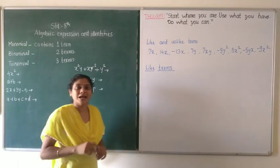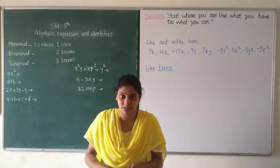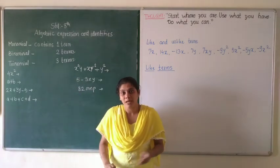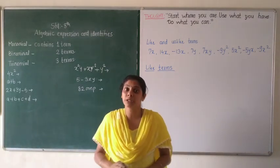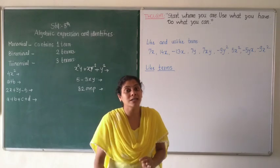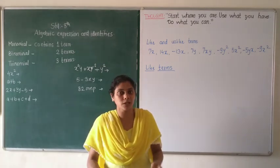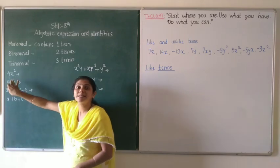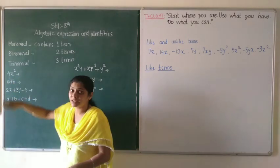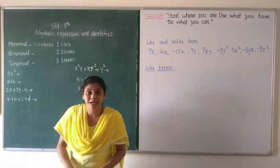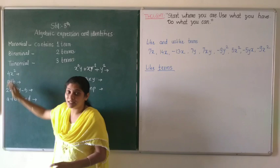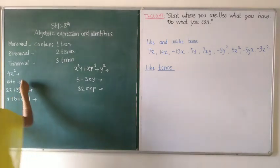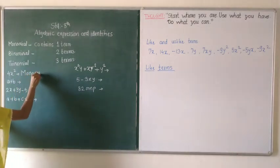Already in the last section we studied how to count the terms. You can see I have written here some examples of expressions. While going through these expressions we have to count the number of terms, and on the basis of their number of terms we will classify them as monomial, binomial or trinomial. The first expression is 4x squared. In this expression there is no mathematical operation like addition or subtraction, so it contains only one term. This is classified as monomial.